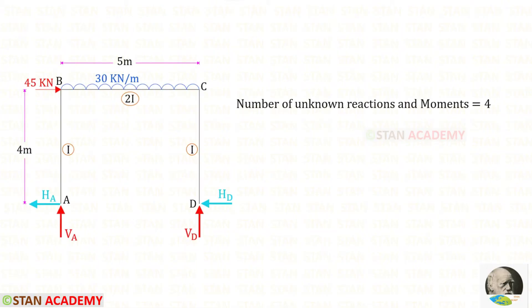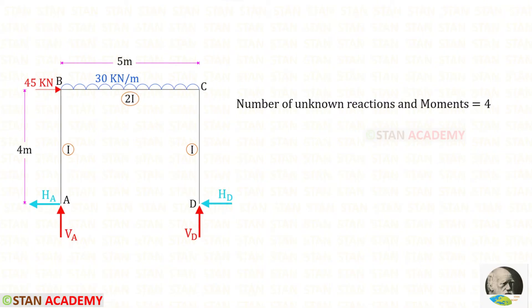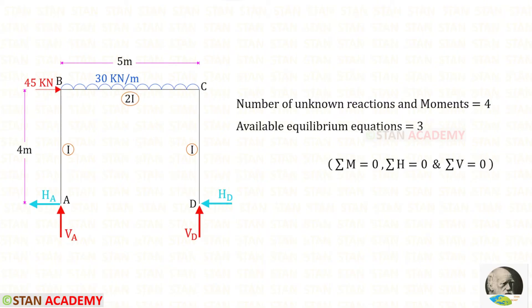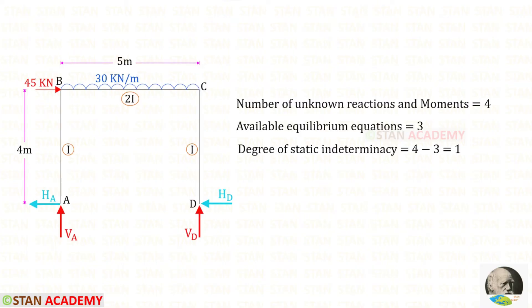In this frame the number of unknown reactions and moments are 4. At point A we have the horizontal reaction HA and the vertical reaction VA, and at point D we have the horizontal reaction HD and the vertical reaction VD. So the total number is 4. The available equilibrium equations are 3. The degree of static indeterminacy will be 4 minus 3, so it will be 1. Let us release HD.